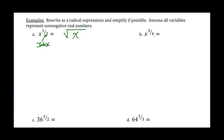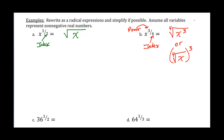Let's look at part b: x to the 3 fourths. Well, 4 is going to be my index, and 3 is going to be my power. So I can write this as the fourth root of x to the 3rd. I can also write it as the fourth root of x, raised to the 3rd power at the end. This second form is more simplified and is my preferred final answer. The first form is useful when doing extra work after converting.